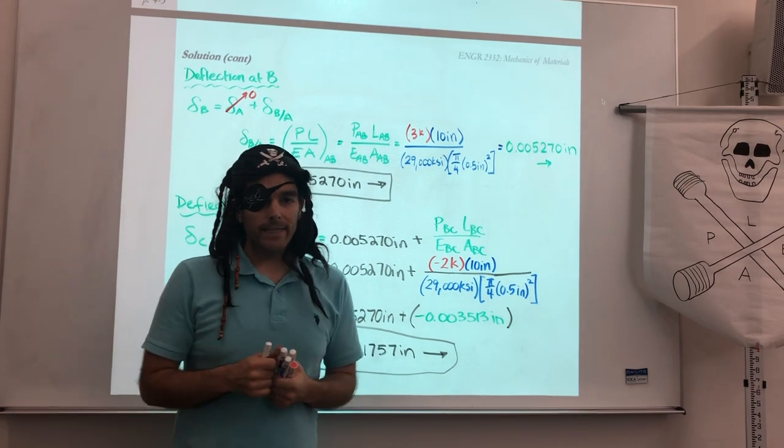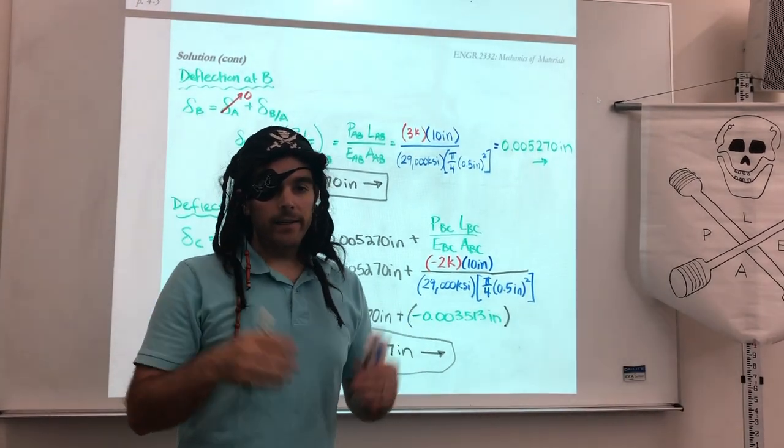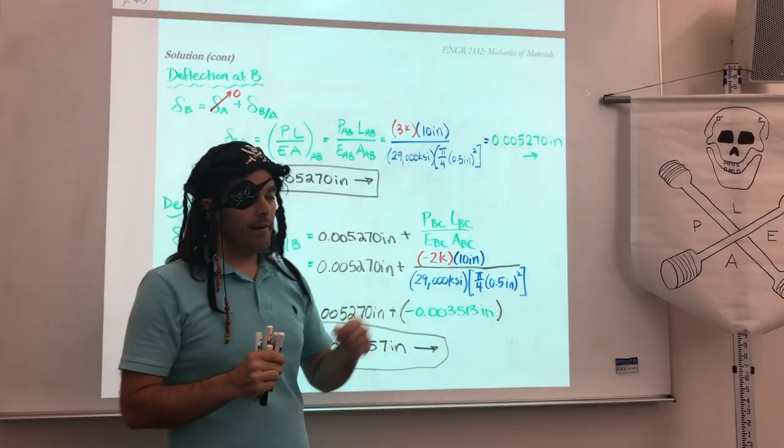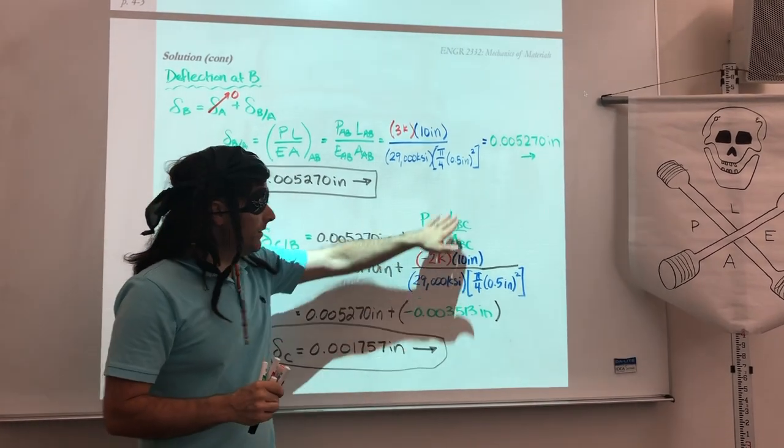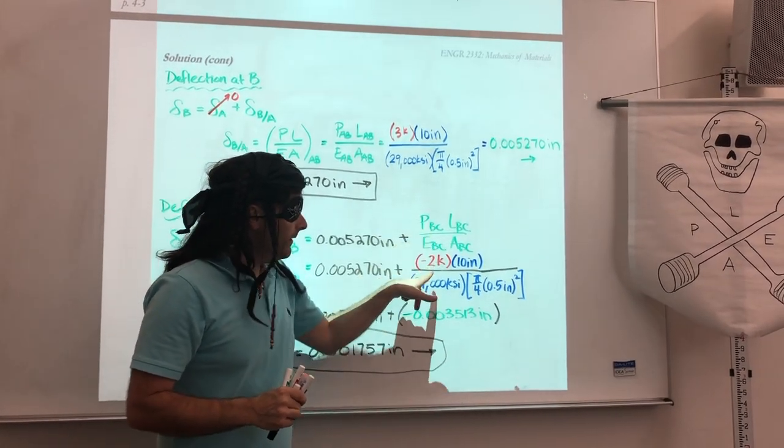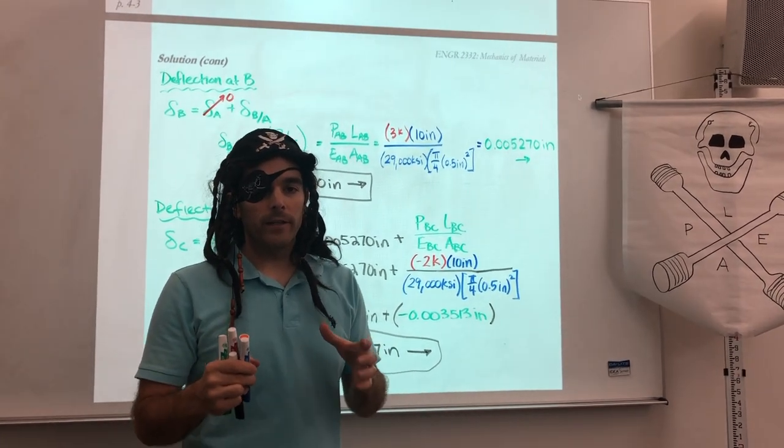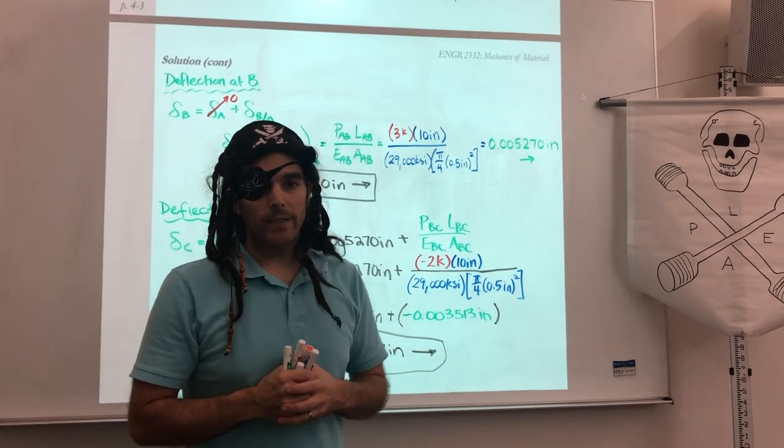So I hope this is making sense to you. I want you guys to go ahead and try the deflection at point D. So now come up with the deflection at the very end of that rod, follow the same procedure, making sure that in our formula for the axial force, we always want to use the axial force on that segment alone. And we get that force from our axial force diagram.